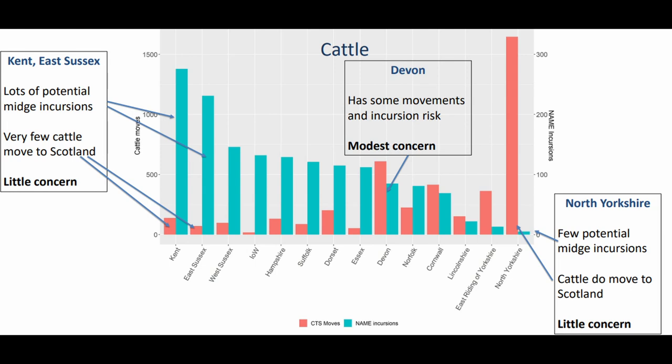What we've done here is a very simple analysis to look at where the counties are that the Met Office say are regular sites of introduction, and how many animals moved to Scotland from those counties. You can see both cattle and sheep in figures two and three, with the turquoise bars showing the number of potential midge introductions over a summer and the pink-red bars showing the number of animals that move from those counties. In most cases, for sheep in particular but also for cattle, those counties in the southeast that have large numbers of potential midge introductions move very few animals to Scotland. Then there's North Yorkshire, which moves a lot of animals to Scotland but has very few introductions. And in the middle there's Devon, which has a moderate amount of both.